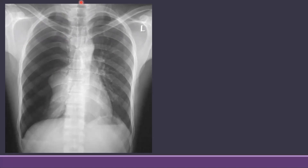If you look at other structures, you can see that the trachea is shifted towards the left side — it is being pushed by the air which is present here, pushing the trachea towards the opposite side. Similarly, the heart is also not in its normal position and is also being pushed towards the left side. These are all typical features of a pneumothorax.